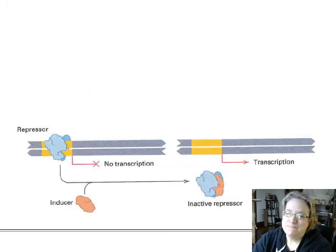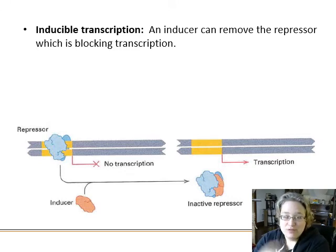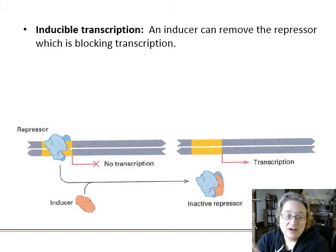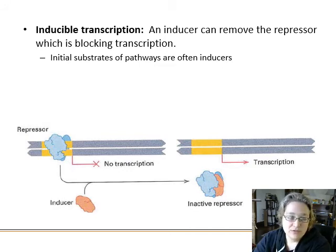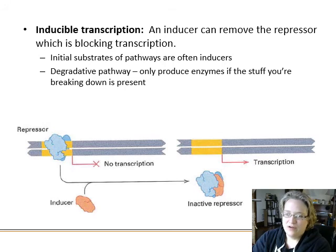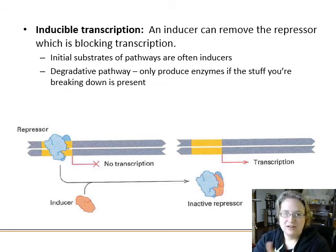We can also have inducible systems, where a repressor is blocking transcription but a compound called an inducer causes the repressor to bind to it and pull off the DNA, allowing transcription to proceed. For example, when lactose is present it pulls the repressor off the lac operon, enabling transcription of lactose-utilizing enzymes. This is energy-saving: you only produce breakdown enzymes when the substrate is actually present.